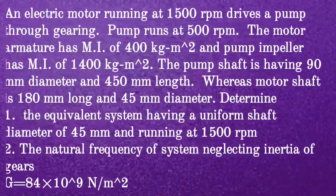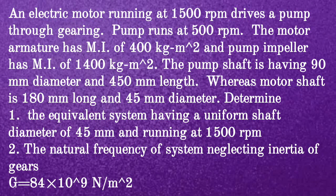Given question: An electric motor running at 1500 rpm drives a pump through gearing. The pump runs at 500 rpm. The motor armature has a moment of inertia of 400 kg·m² and the pump impeller has a moment of inertia of 1400 kg·m². The pump shaft has a diameter of 90 mm and length of 450 mm, while the motor shaft is 180 mm long and 45 mm in diameter. Determine the equivalent system with a uniform shaft diameter of 45 mm running at 1500 rpm, and the natural frequency neglecting inertia of gears. Take G = 84 × 10⁹ N/m².